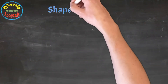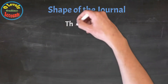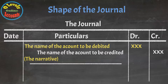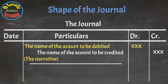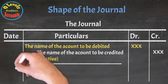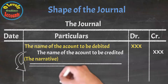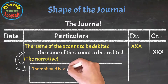This is the shape of the journal. We have date, particulars, debit and credit columns. The debit account should be close to the margin like this, and the credit account should be indented away from the margin like this. The associated amount should be placed in the respective debit and credit columns. There should be a gap between debit and credit amounts.